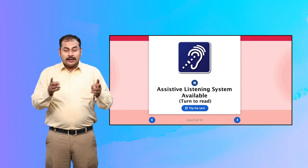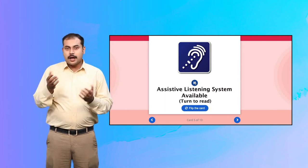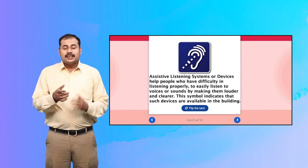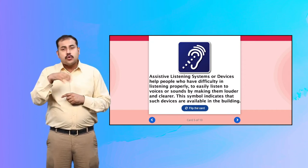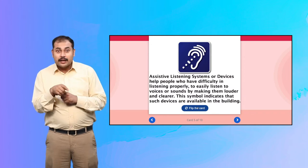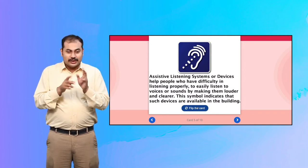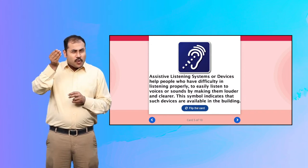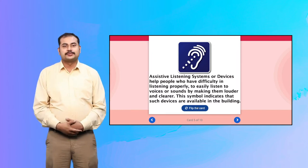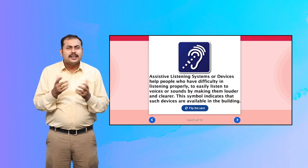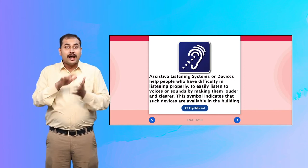Assistive Listening System Available. Assistive listening systems or devices help people who have difficulty in listening properly to easily listen to voices or sounds by making them louder and clearer. This symbol indicates that such devices are available in the building.